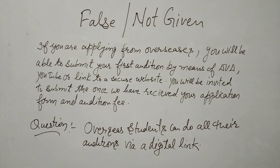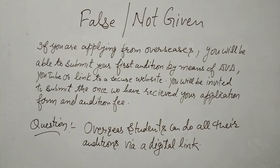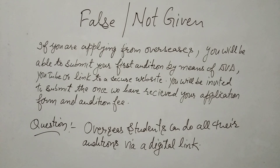True is easier to find out than False and Not Given, because False and Not Given are both difficult. It's difficult to distinguish between whether the statement is False or Not Given. Let's read a paragraph first and then I am going to read the question. Then we will try to find out by analyzing whether the statement is False or Not Given.